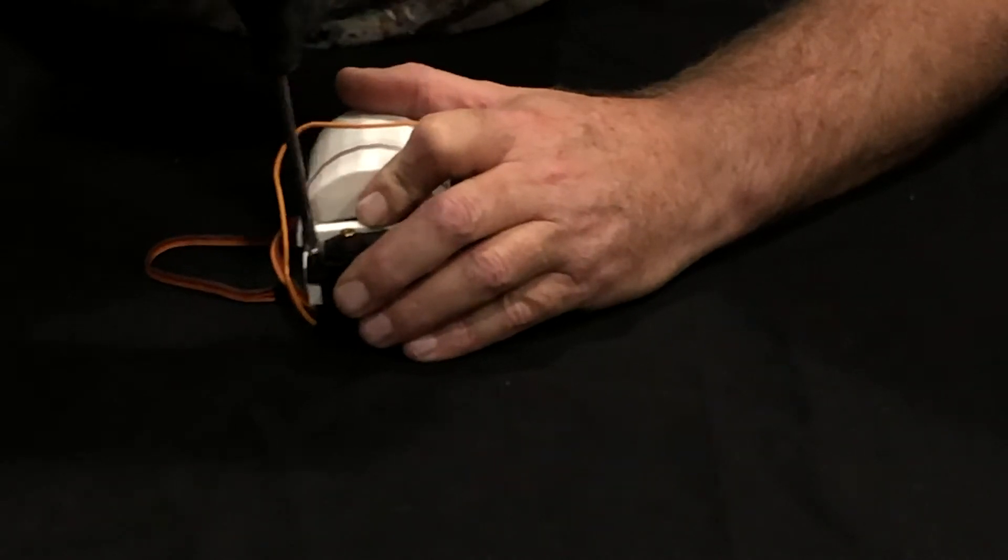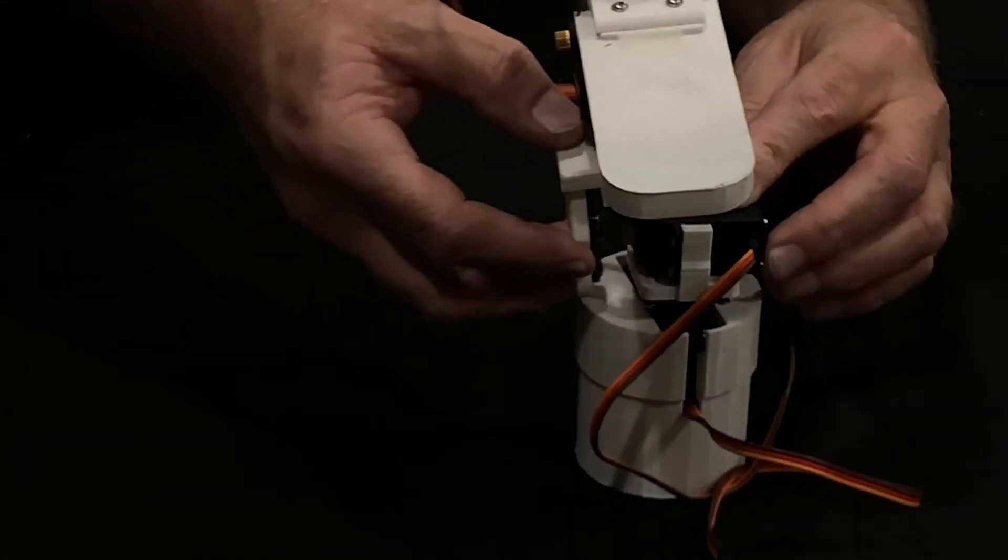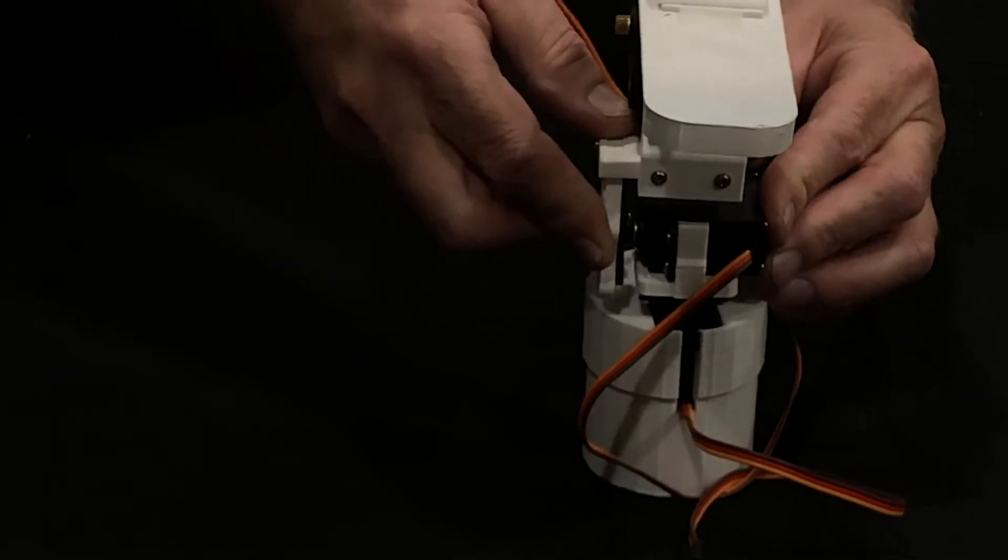And once that's done, we'll mount the link horn adapter using another tiny black screw, screw A.